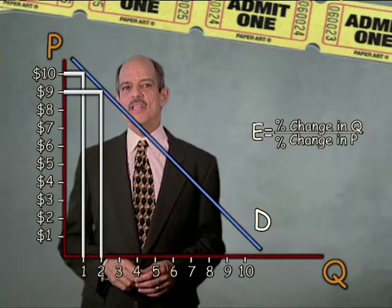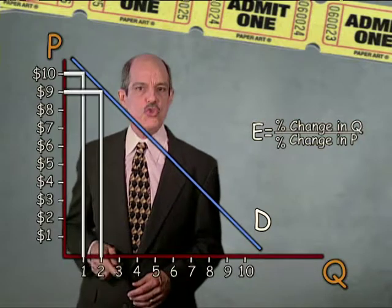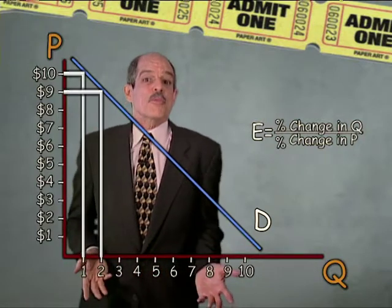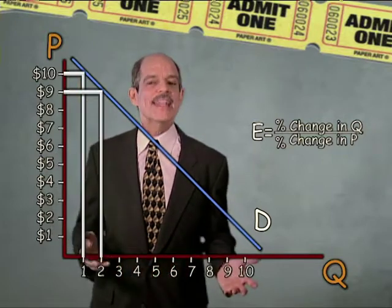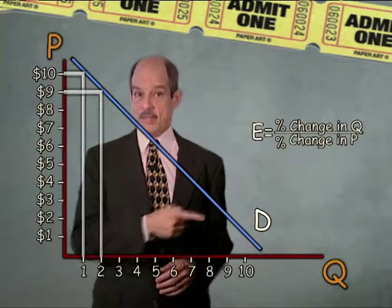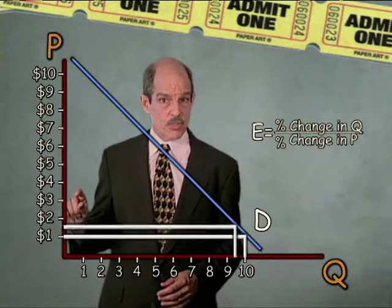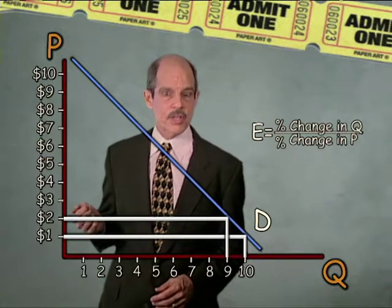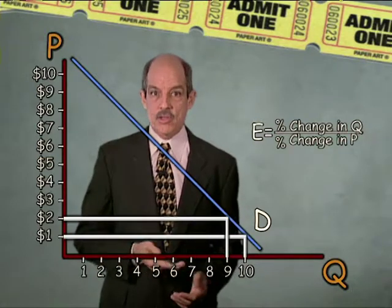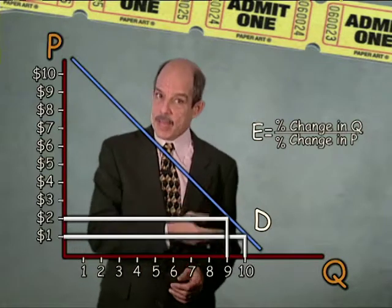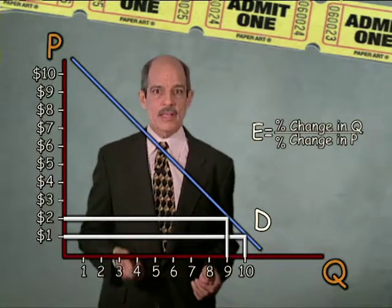Yet that same price change causes quantity demanded to go from one movie ticket to two — a change of 100 percent. When quantity demanded changes more than price in percentage terms, demand is price elastic. Meanwhile, down at the bottom, the opposite occurs: the price range changes a lot in percentages — it doubles from $1 to $2 — yet quantity demanded only drops from 10 to 9. In percentage terms, quantity demanded changes less than price, making it price inelastic, just because of where we are on the line.